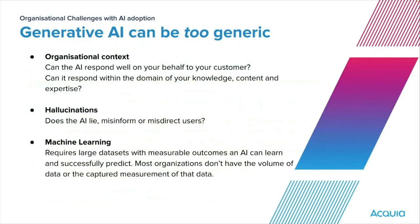There are some challenges with this approach, and the biggest one right now is that generative AI can be too generic. It can't respond well in organisational context — there are ambiguities in language, so something that means one thing inside your organisation might mean something broader or more ambiguous to ChatGPT. That can lead to misdirection and misinformation from the AI.